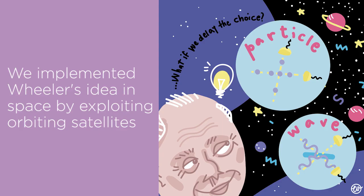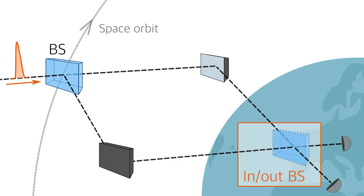In our experiment, we extended Wheeler's delayed-choice idea to the space scenario, and demonstrated the need of quantum wave-particle duality at the unprecedented distance of low-Earth orbit satellites, with an interferometer whose arms extend for thousands of kilometers in space.